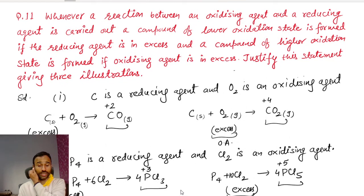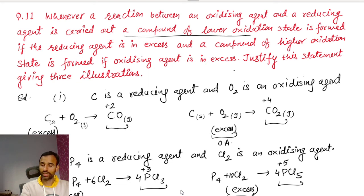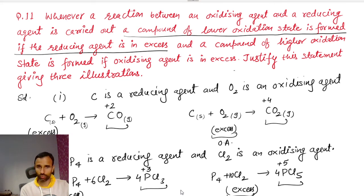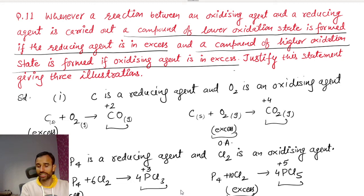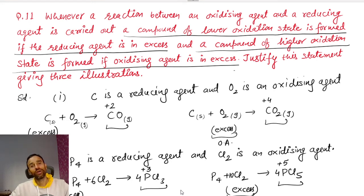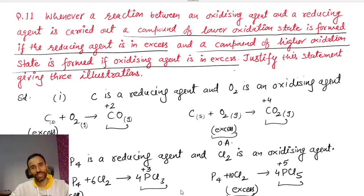The question was: when a reaction is carried out, a compound of lower oxidation state is formed if the reducing agent is in excess — and we have proved that. That's all about question number 11 of NCERT exercise of redox reactions. Thank you very much for watching this video. Do like, subscribe and share my channel. God bless you all. Happy learning. Jai Hind.